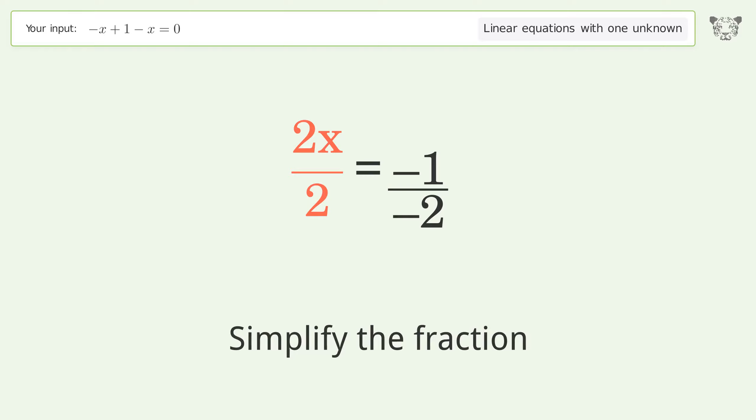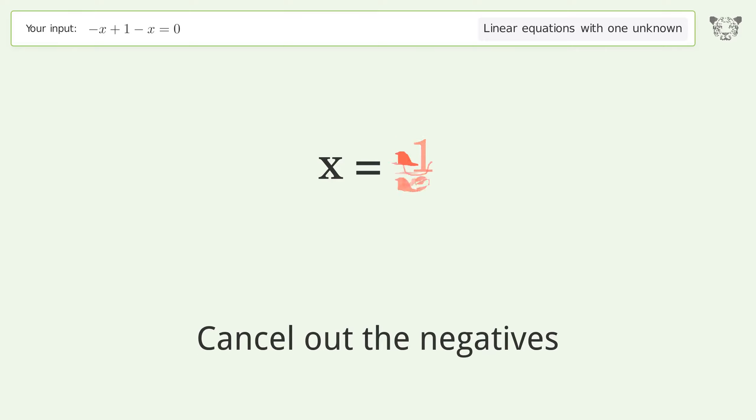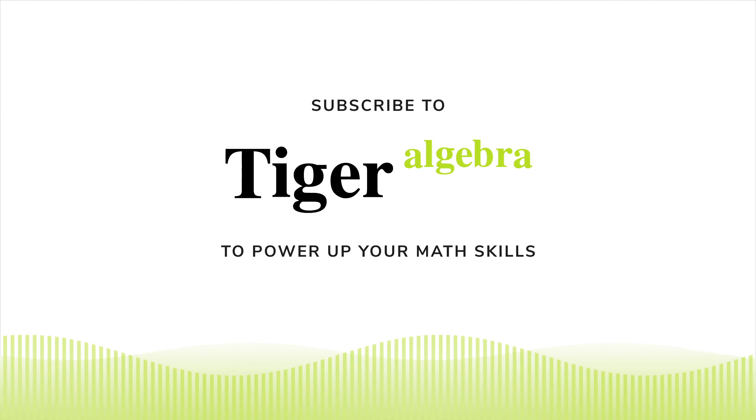Simplify the fraction. Cancel out the negatives. And so the final result is x equals 1 over 2.